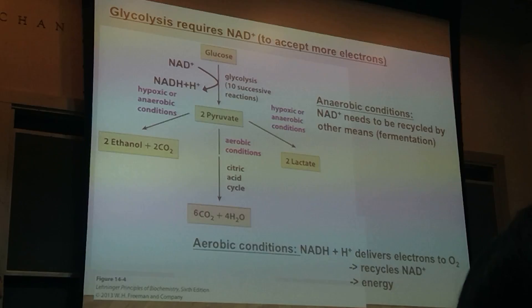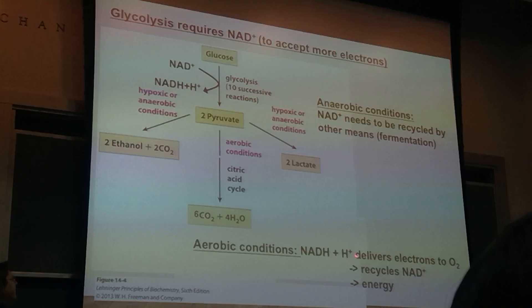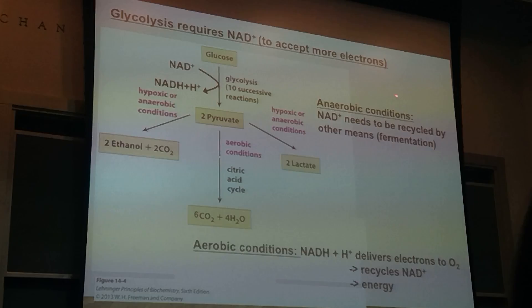Under aerobic conditions, we're going to recycle — deliver the electrons to oxygen as the final electron acceptor — and then we have recycling NADH. For anaerobic conditions, the NAD has to be recycled by other means, like fermentation. So pyruvate is going to go to ethanol, or pyruvate is going to go to lactate.